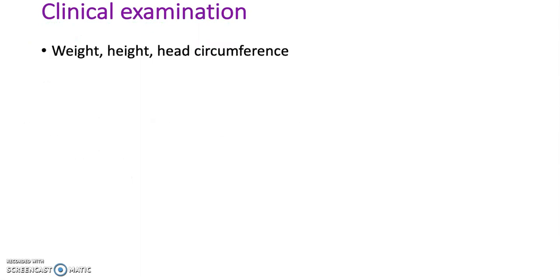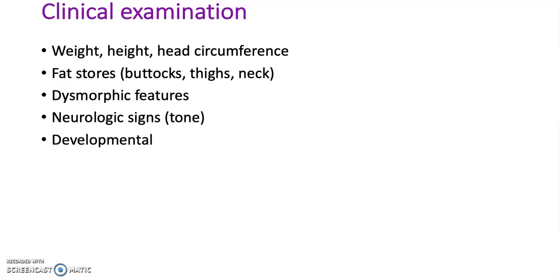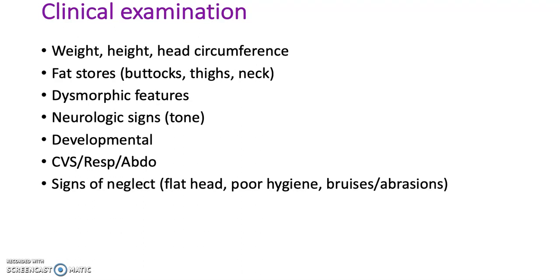Clinical examination: weight, height, and head circumference should all be measured. Fat stores should be noted in the buttocks, thighs, and neck. Any dysmorphic features should be noted. Neurological signs such as tone should be noted. Assess developmental milestones and check cardiovascular, respiratory, and abdominal systems. Check for any signs of neglect such as a flat head, poor hygiene, bruises, or abrasions.